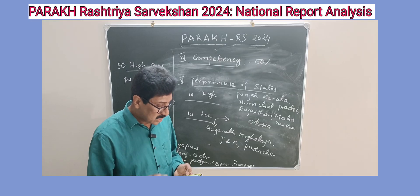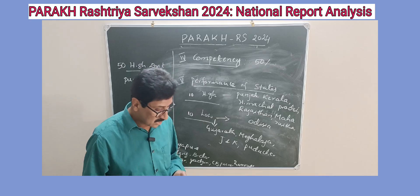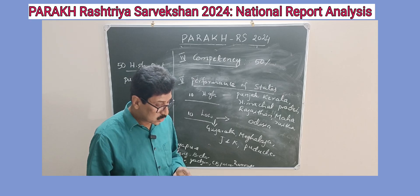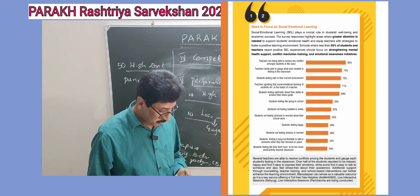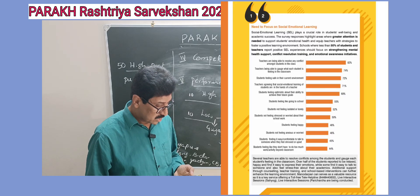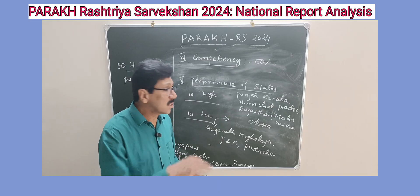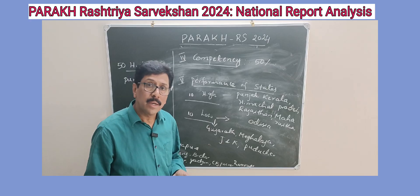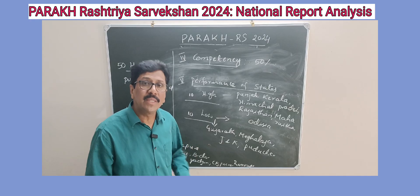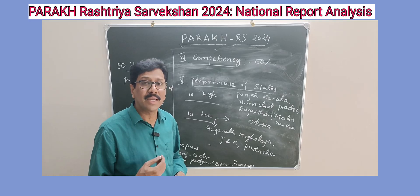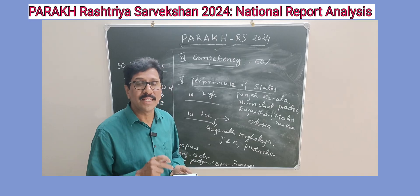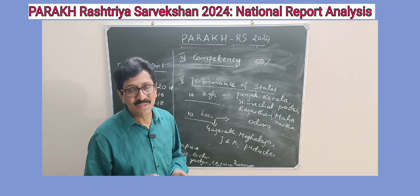Technology access is another concern — only 33 percent of students have a laptop, desktop, or tablet for learning at home. The report also covers essential school facilities, social-emotional learning, inclusiveness at schools, and continuous professional development. These are the targeted interventions that all stakeholders need to focus on to make schools better places for learning and to enable students to acquire competencies and learning outcomes. The full PARAKH report is available on the PARAKH website; the link is mentioned in the description box.